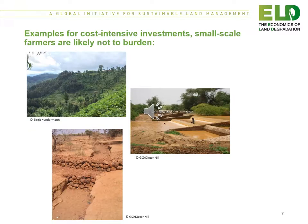These photos illustrate three cost-intensive investments that small-scale farmers are unlikely to be able to finance, such as the production of terraces, the establishment of water-spreading weirs, and other gully erosion controls.